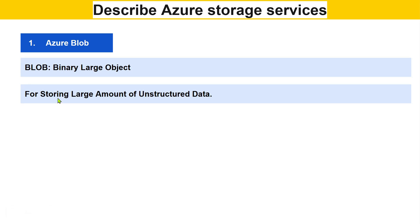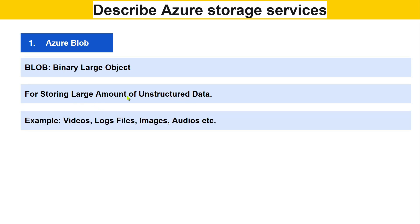Azure Blob is used for storing large amounts of unstructured data. Examples include videos, recordings, log files, and images. Every time a system is running it generates huge amounts of log files. These are all unstructured data — images, audios, etc.